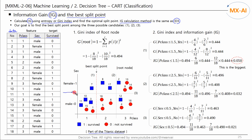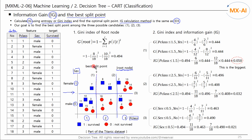This data is shown in this figure. This is the root node. The PCLASS feature has values 1, 2, and 3, and the SEX feature has female and male. There are three ways to split this node for the CART algorithm. Our goal is to find the most efficient splitting point among these candidates. If we find the one with the largest information gain among the three candidates, that is the best split point. To calculate the information gain, we first calculate the Gini index of the root node.